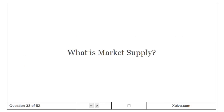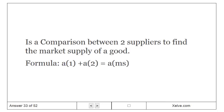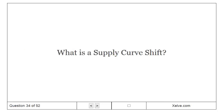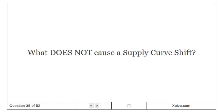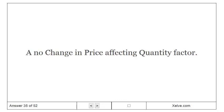What is market supply? It is a comparison between two suppliers to define the market supply of a good, using the formula A plus A equals A. What is a supply curve shift? A change that places the supply curve up or down from its original position on the graph. What does not cause a supply curve shift? A change in price affecting quantity — that is not a shift factor.